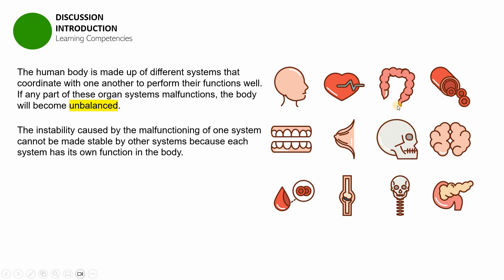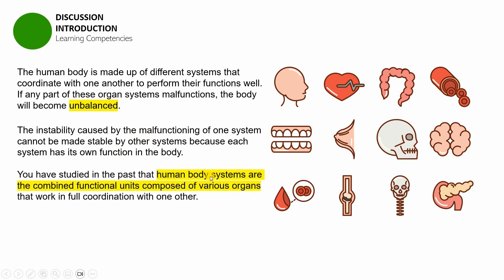So if your respiratory system is having some ailments, those ailments are not going to be fixed or corrected by your digestive system. In the past, you have studied that the human body systems are the combined functional units composed of various organs. The basic unit of life is a cell, and if you put cells together, that will make a tissue.